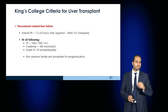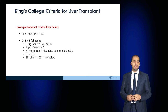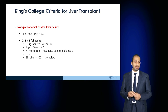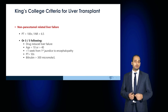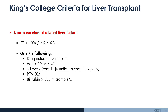In the absence of paracetamol-related liver failure, a PT of more than 100 seconds or INR of more than 6.5 is an indication for referral. Or if three of the following five criteria are present: other drug-induced liver failure, age less than 10 or more than 40, more than a week from first jaundice to encephalopathy, PT more than 50 seconds, or bilirubin more than 300 micromoles per litre — the patient should be referred for transplantation.